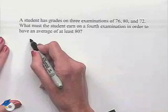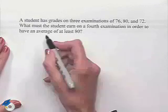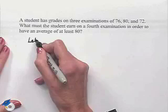We'll begin by noting that the unknown value, which is the score on the fourth examination, can be represented by the variable x.